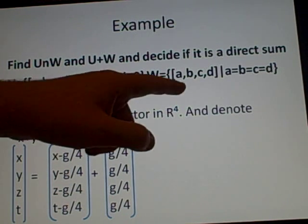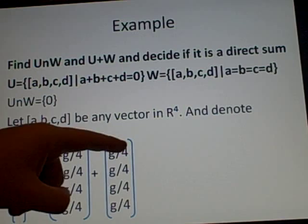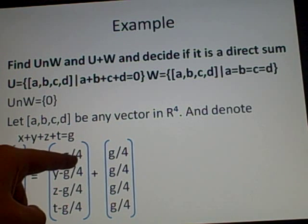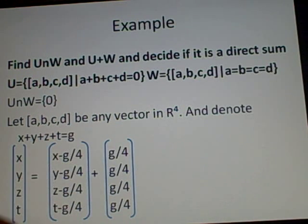And the second matrix is in W, since all entries equal g/4. When you add them together you get [x,y,z,t], and it all works out very nicely.